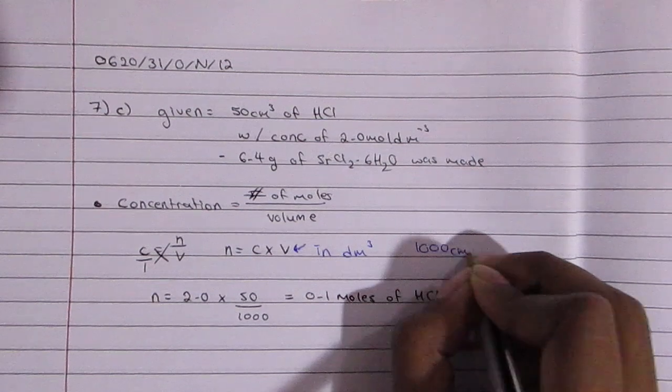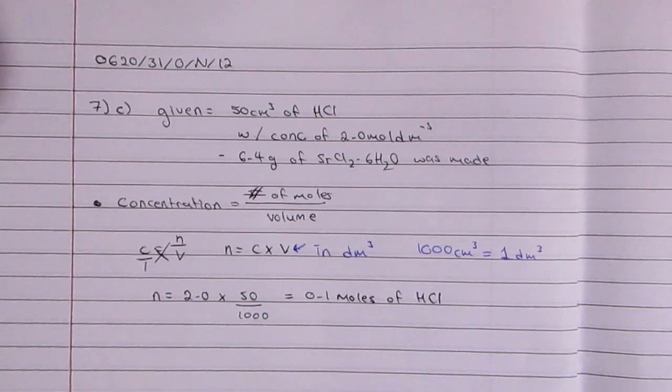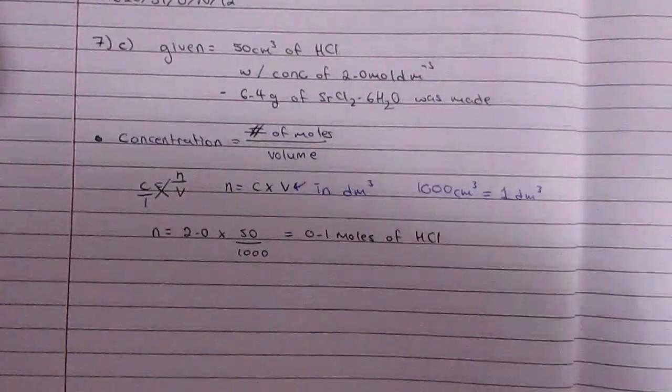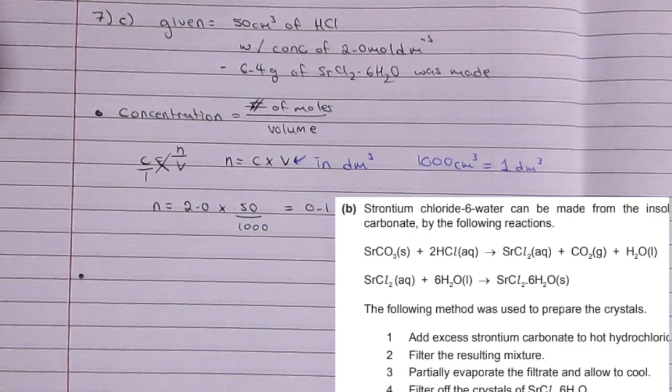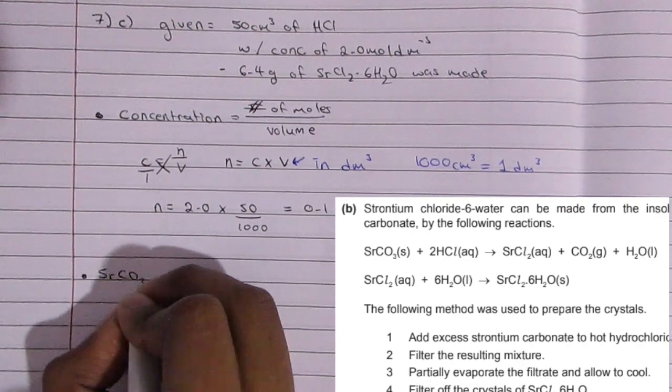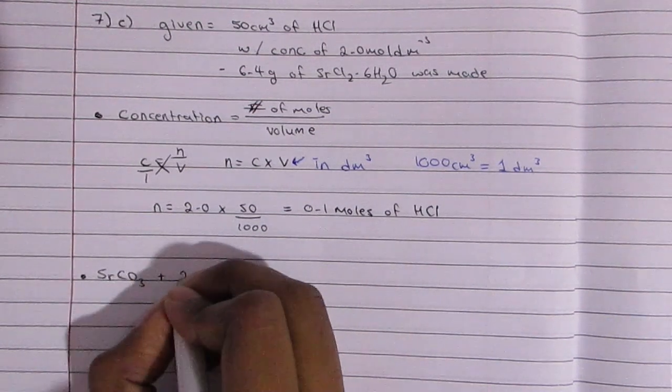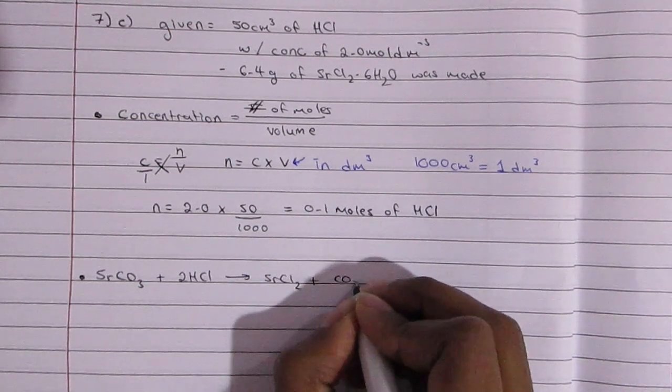Then the next part was to find out the number of moles of the strontium chloride hexahydrate, and what you're going to do is you're going to use the equation that's given above, the equation that was given to us in part B. That is shown right there on the screen and I'm just going to write it out for you guys first, and then from there you're going to look at the ratio.